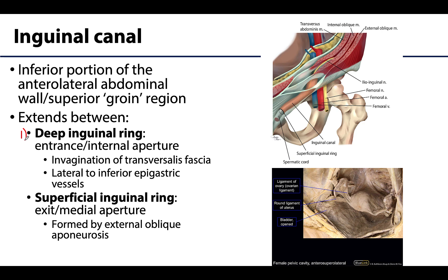Recall that the transversalis fascia is one of those deep layers of the anterior and anterolateral abdominal wall. The general region of the deep inguinal ring can be seen in this image, with one of the potential contents of the inguinal canal traversing it — the round ligament of the uterus will actually traverse the inguinal canal. The deep inguinal ring is located lateral to the inferior epigastric vessels or the lateral umbilical fold, and we will talk about the importance of that relationship more in the video regarding inguinal hernias.